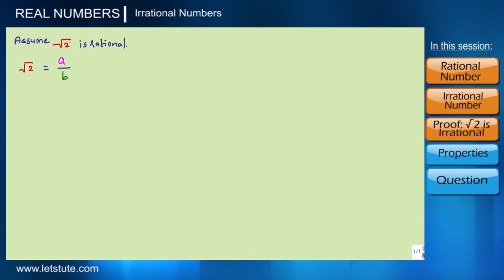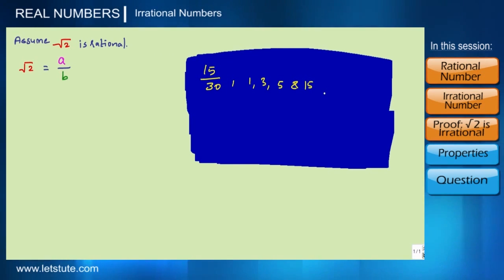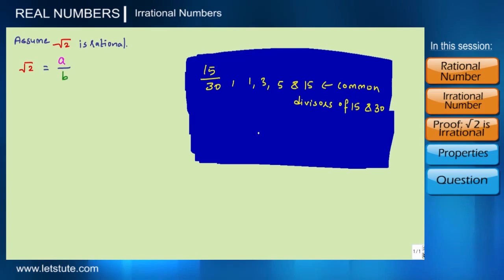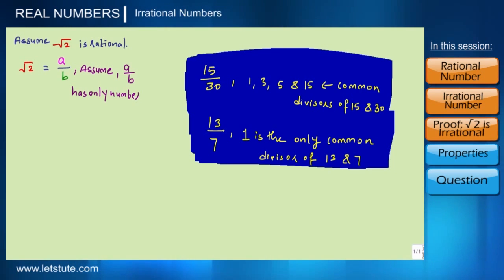So we write root 2 = a/b where a and b are both integers. We also know that a ratio can have one or more common divisors — for example, 15/30 is a rational number but 15 and 30 share multiple common divisors: 1, 3, 5, and 15. Whereas 13 and 7 have only 1 as their common divisor. So let's assume that the ratio a/b has only 1 as a common divisor, to test whether our assumption is correct.